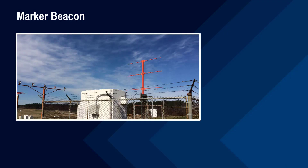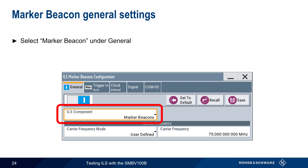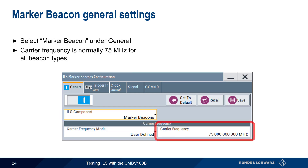Now it's time to look at marker beacons. Compared to localizer and glide slope signals, marker beacon signals are very easy to understand and configure. To configure a marker beacon signal, start by selecting Marker Beacon as the ILS component. Since all marker beacons typically operate at 75 MHz, the default carrier frequency of 75 MHz should work in most cases.